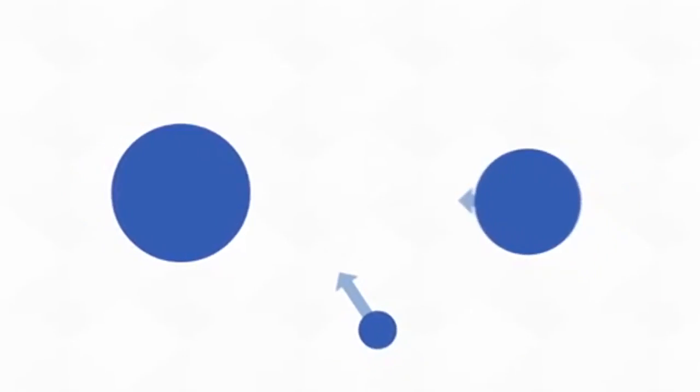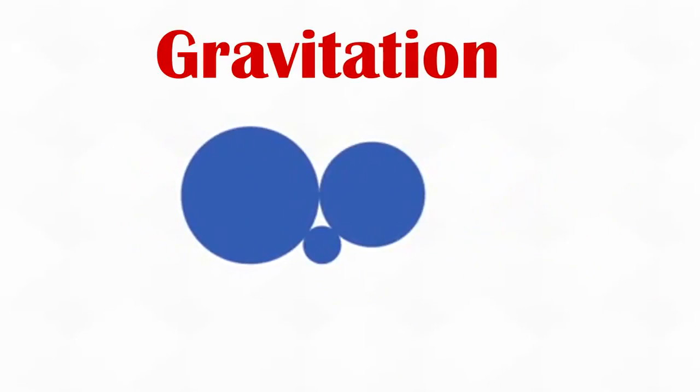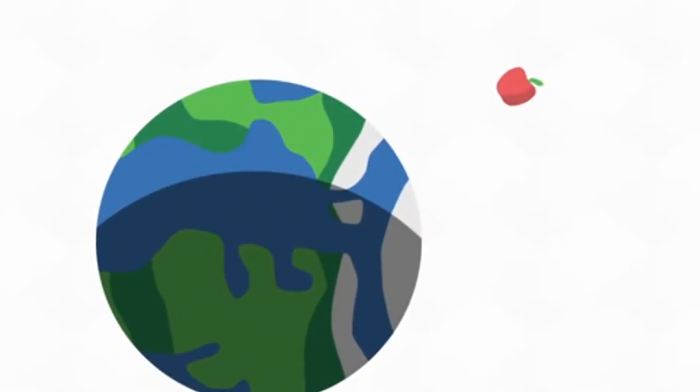In the universe, all objects having a mass attract each other. This is called gravitation. So if we release an object on the surface of the Earth, the Earth and the object will attract each other, and the object will fall to the ground.